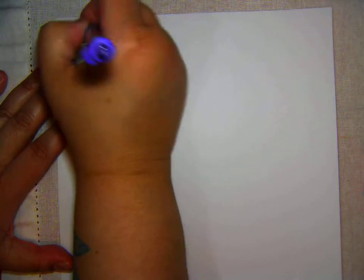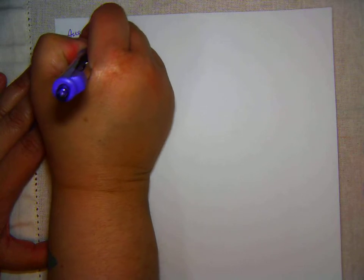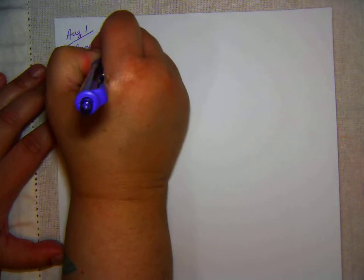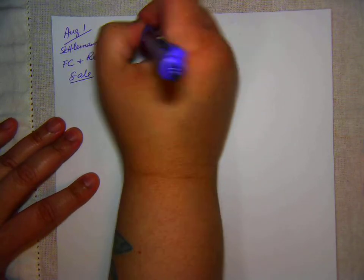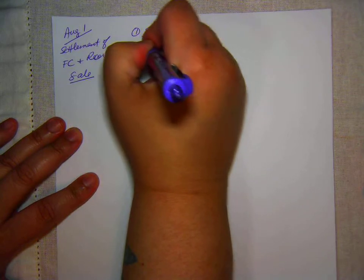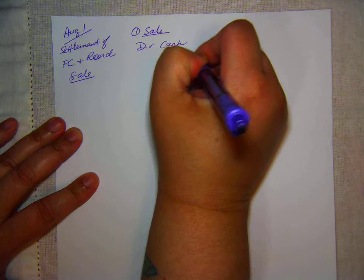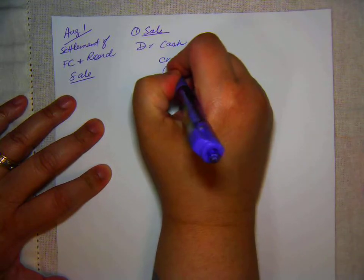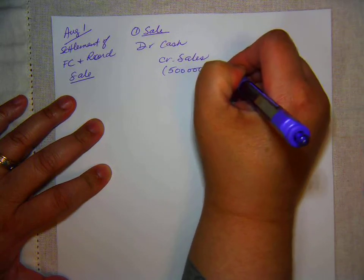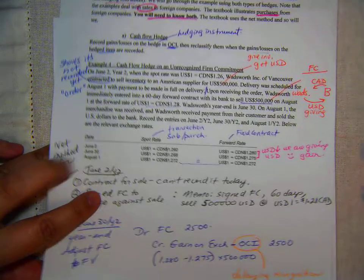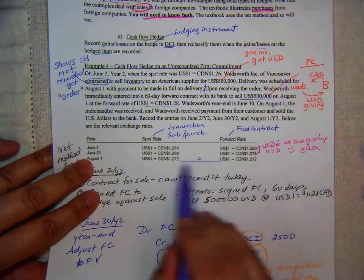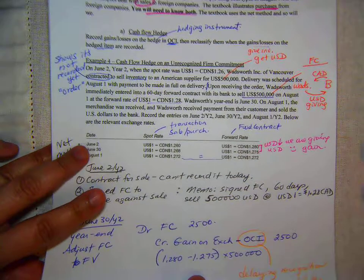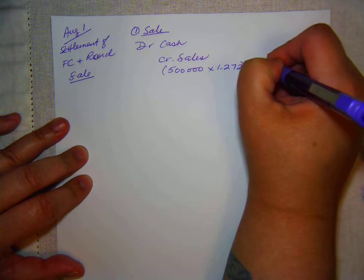That's August 1st — settlement of the forward contract and recording the sale. First thing: let's record the sale. We get cash and we credit sales. We take 500,000 times 1.272 — looking back on page 10, because it's a sale it uses the spot rate of 1.272. The spot rate and the forward rate are always equal on the last day, but technically that is the spot rate. That works out to CAD 636,000.